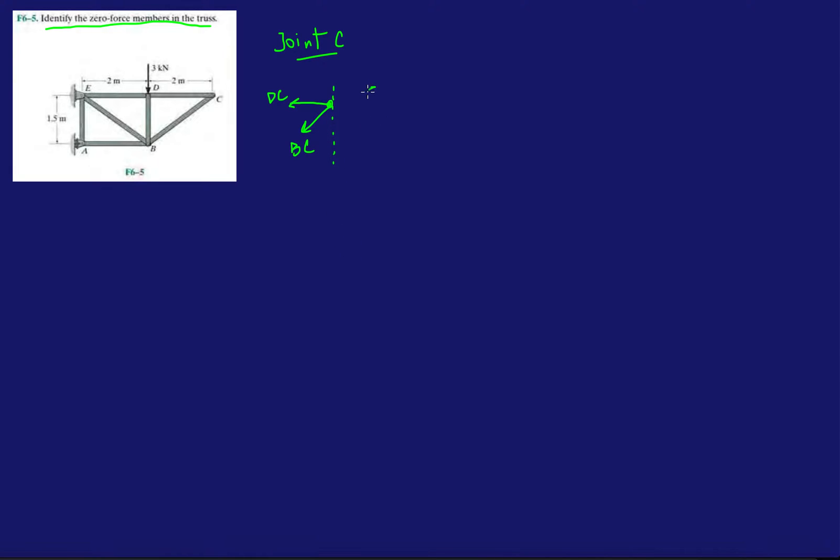Okay, so I know that if I were to say forces in the y, okay, it would yield BC equals zero. Okay, so if you ended up doing the, let's see, this is 2, this is, so it's a 3, 4, 5 triangle.